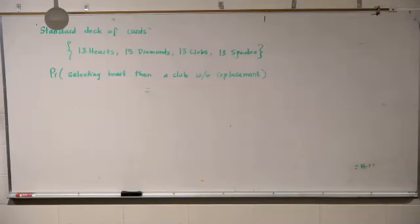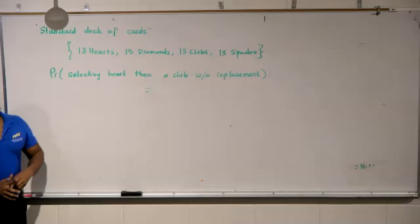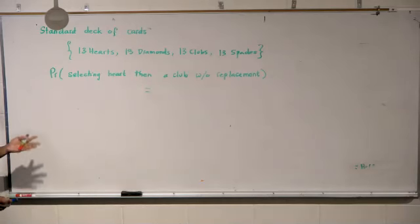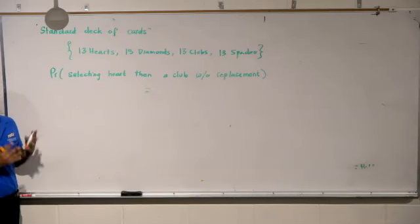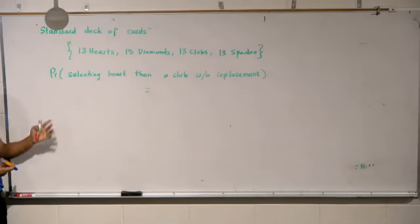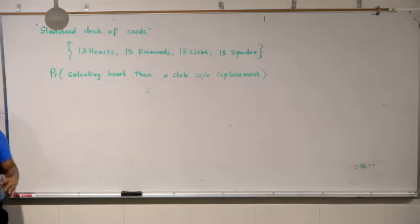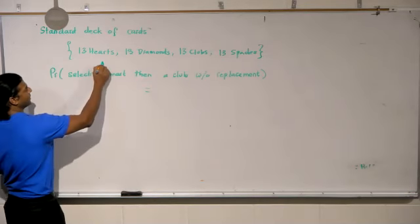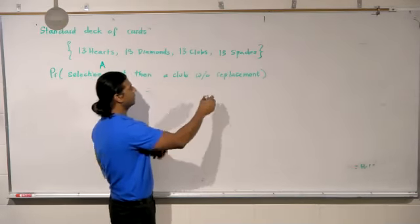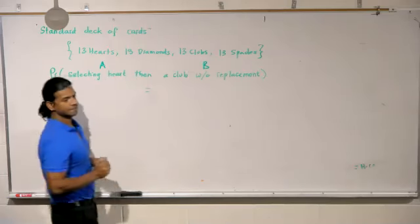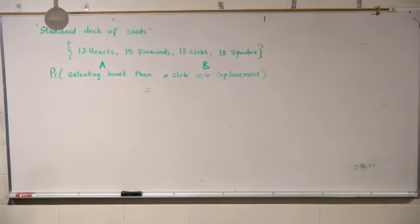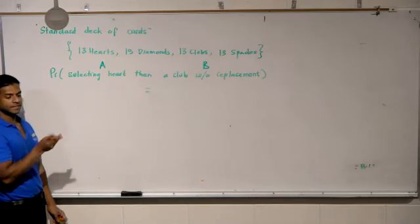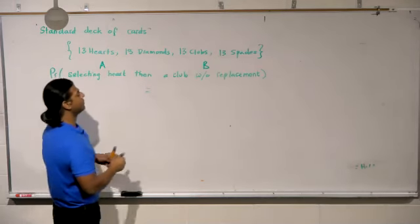Alright, so I could say I'm going to do it formally, but is it necessary? No, I'm just doing it so that you understand the rule. I could call selecting a heart to be event A, followed by a club without replacement event B. Do you believe that event B depends on event A? Yes, so they are dependent events.